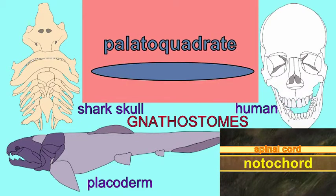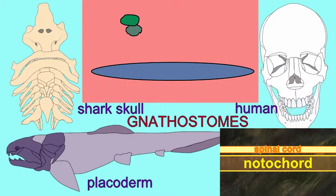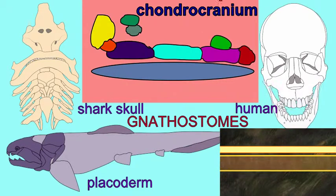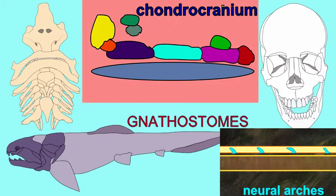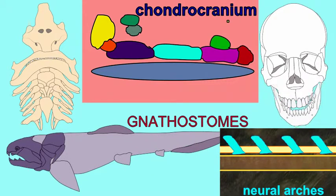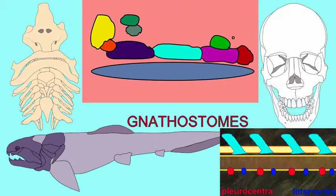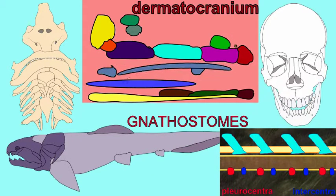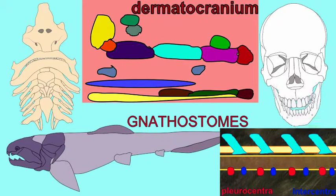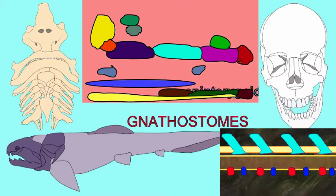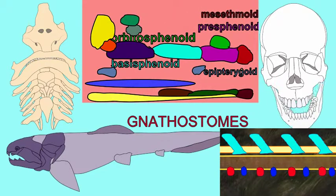Gnathostomes share a number of other skeletal features which evolved in the early gnathostomes. A piece of cartilage under the brain, known as the parasphenoid, contributes to the sphenoid bone in humans.